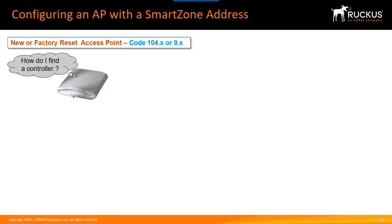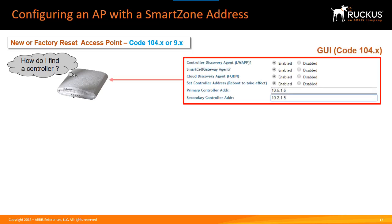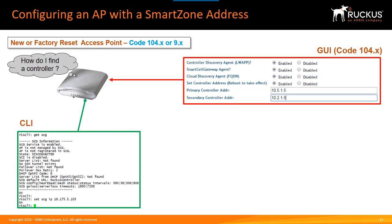Now that we've got AP firmware sorted out, let's talk about how to instruct an AP to find a controller. We essentially have three ways of doing this: we can use the web UI of the AP itself, the CLI of the AP, or provide the controller address automatically through DHCP using option 43.